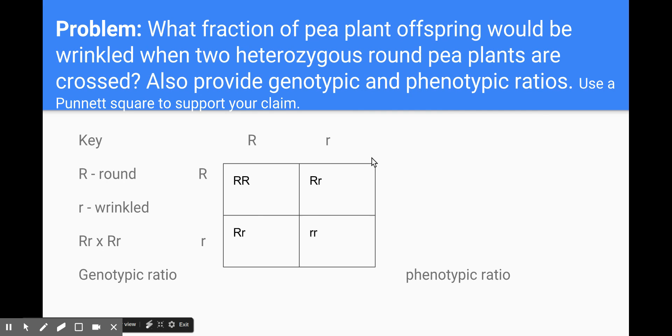And I set up my Punnett square and I demonstrate meiosis. Parents do not pass on pairs of alleles to their offspring. Those alleles separate from each other during the process of meiosis so that an individual gamete contains a single version of an allele.